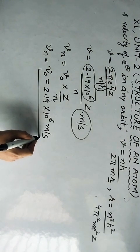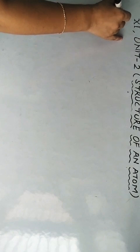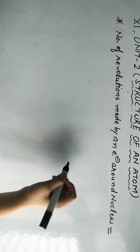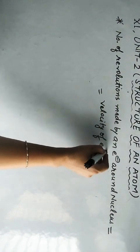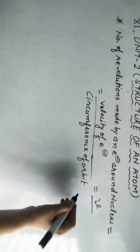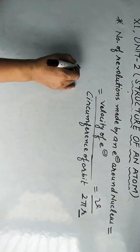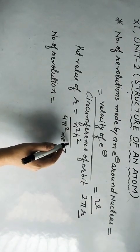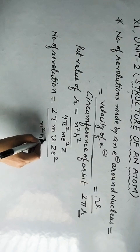After finding the velocity of the electron, we can find the number of revolutions made by an electron around the nucleus. Number of revolutions = velocity of electron / circumference of the orbit = v / 2πr. Substituting the value of r, the number of revolutions = 2πmvZe² / N²H².